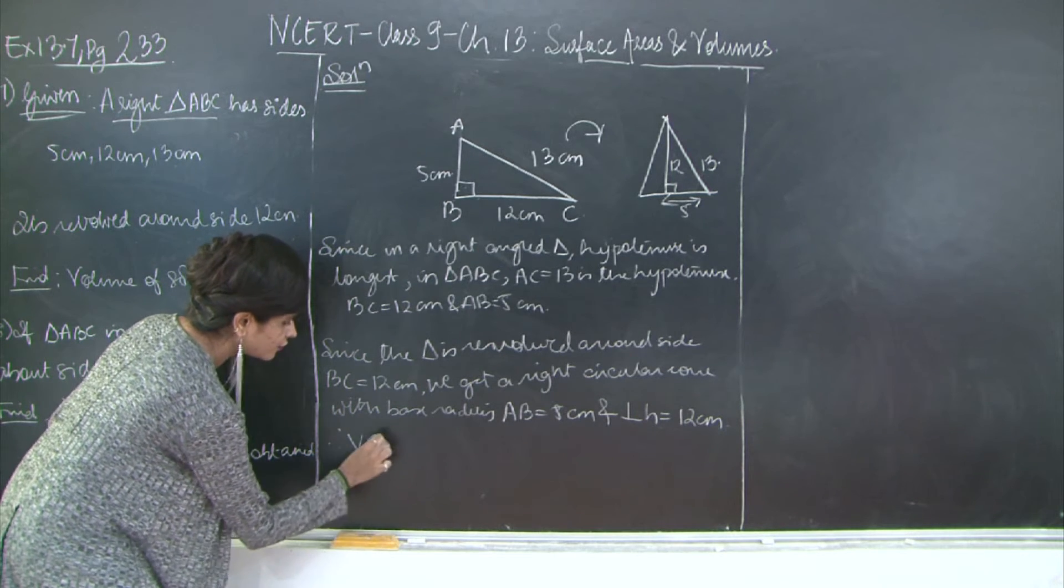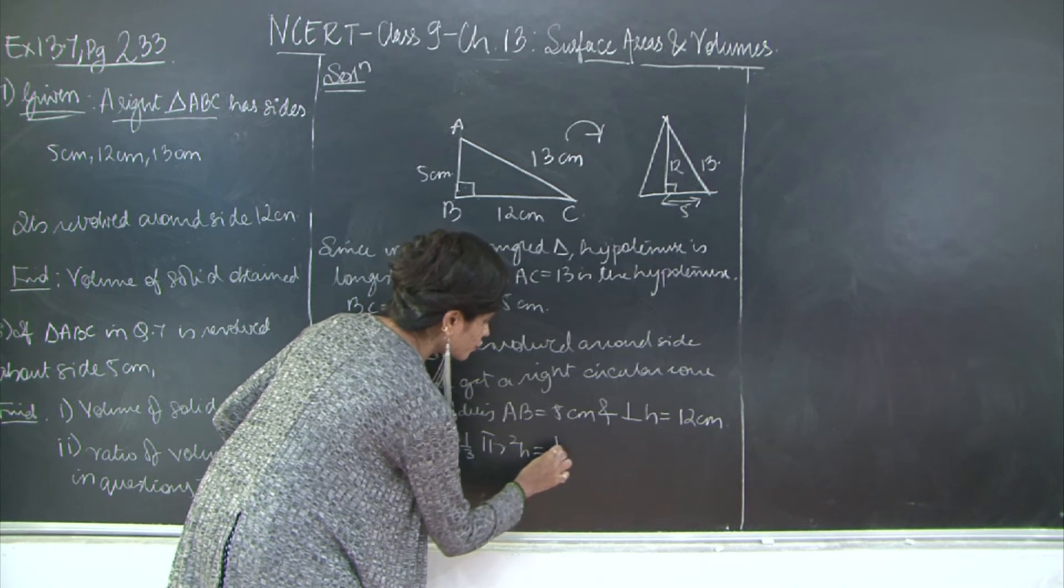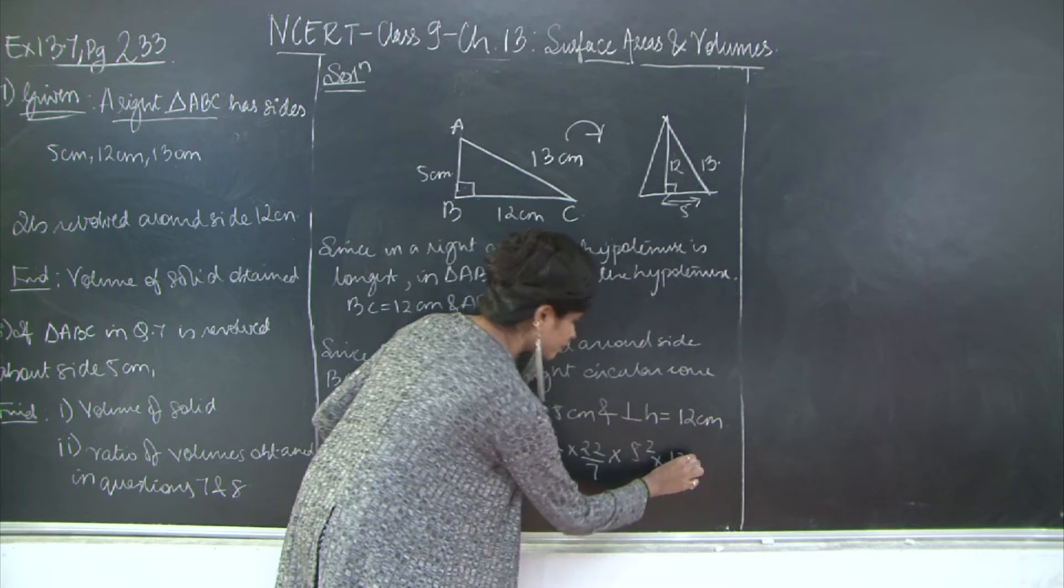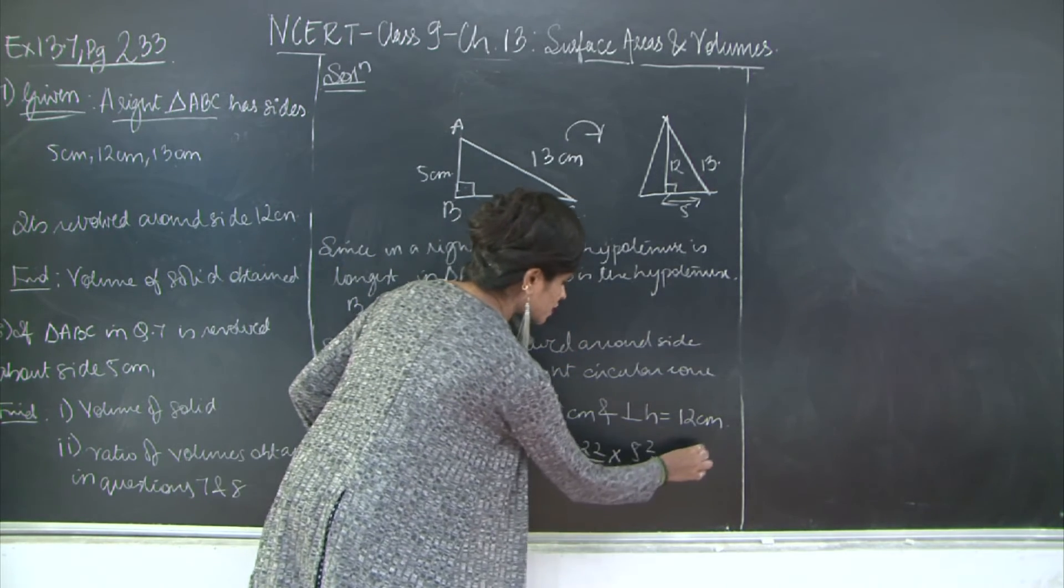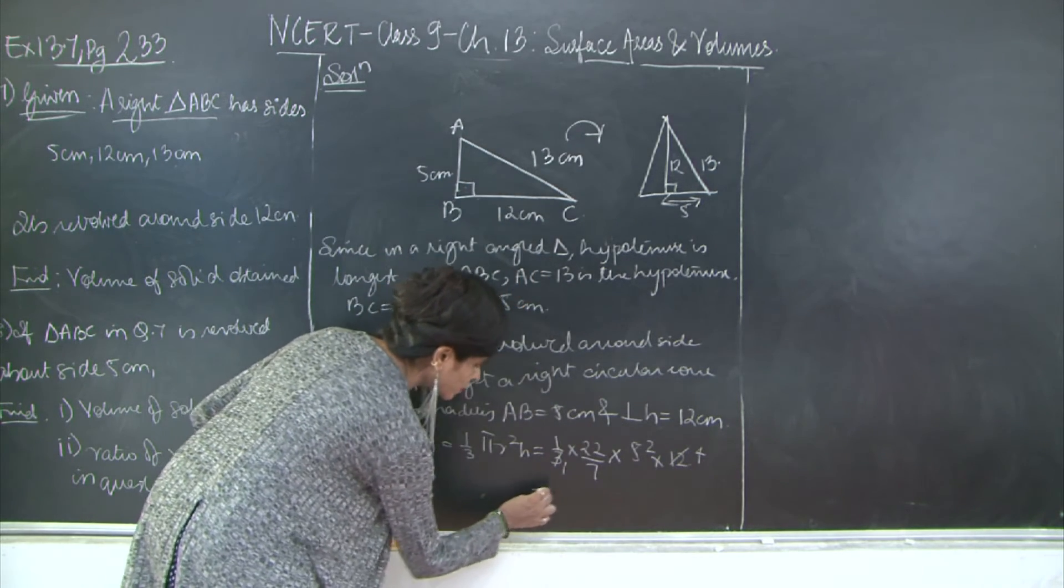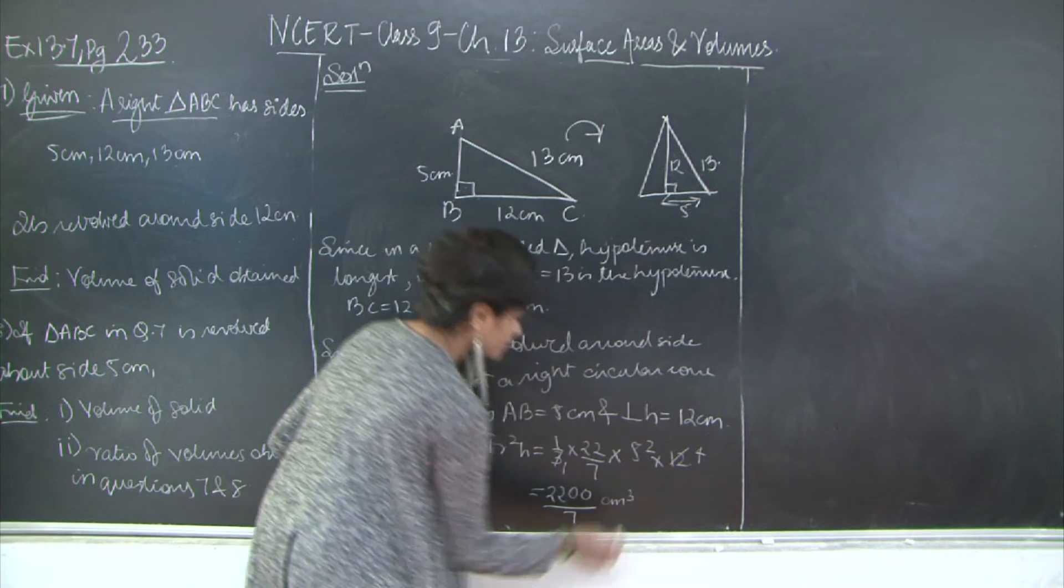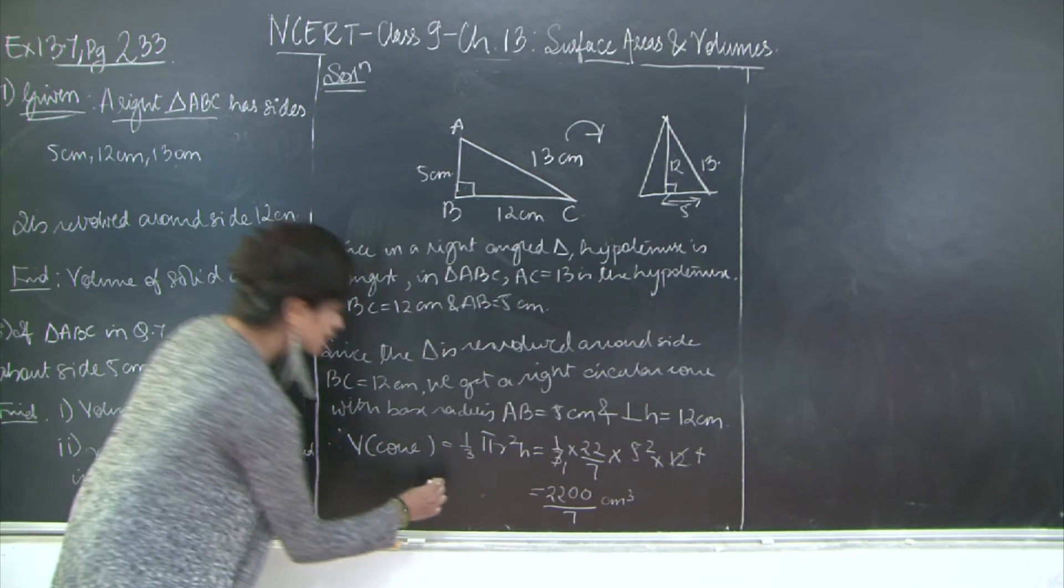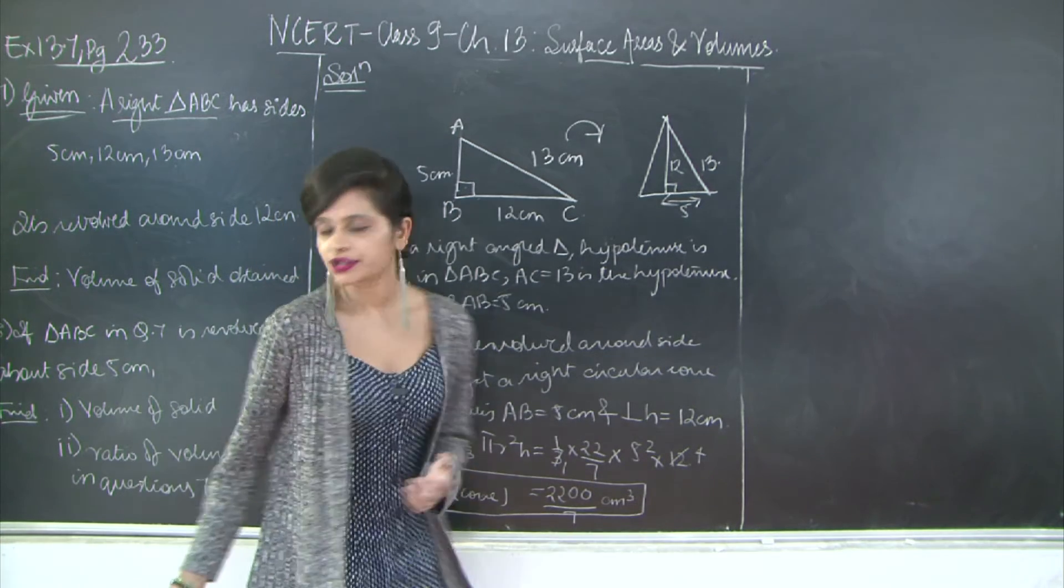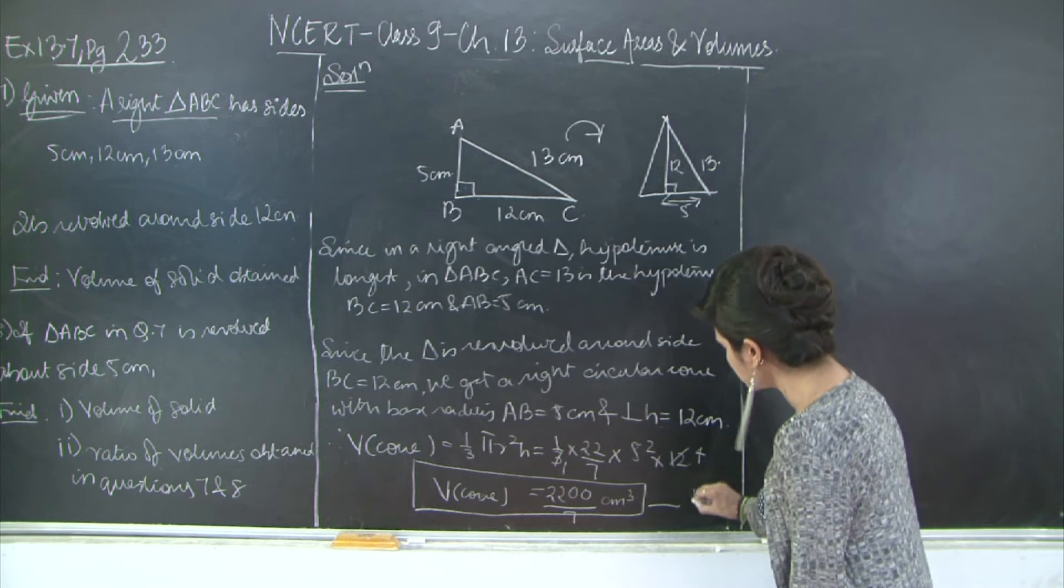Therefore, volume of cone is equal to 1/3 π r² h which is equal to 1/3 × 22/7 × r² which is 5² × h which is 12. So what do you get? 3 into 12, and 5×5 are 25, 25×4 is 100. So 2200/7 cm³. So this is the answer. You can even go ahead and find it in decimal points, but it is better to leave it as it is. Why I will tell you? Because we have question number 8 out here where we need to find the ratio of volumes obtained in question 7 and 8. So let's leave it as it is for now and I will mark this as equation number 1.